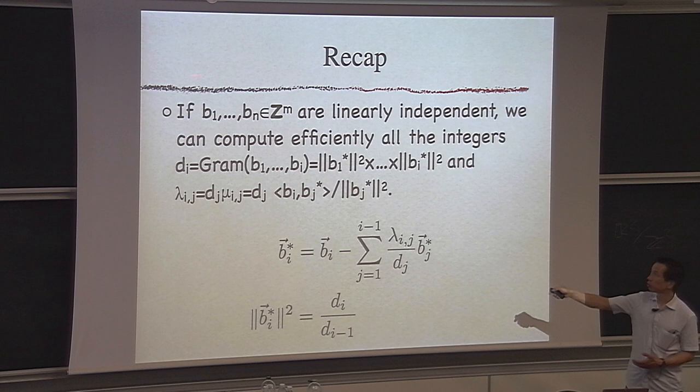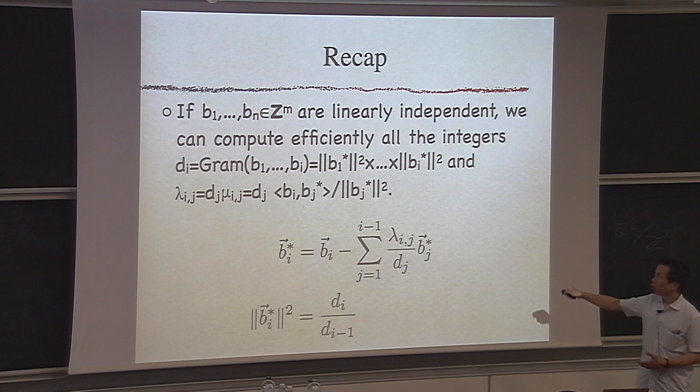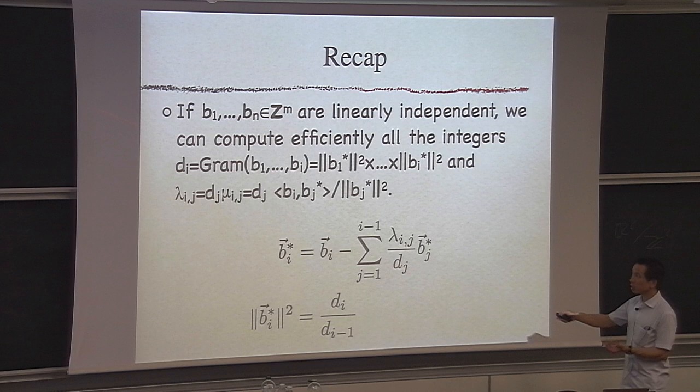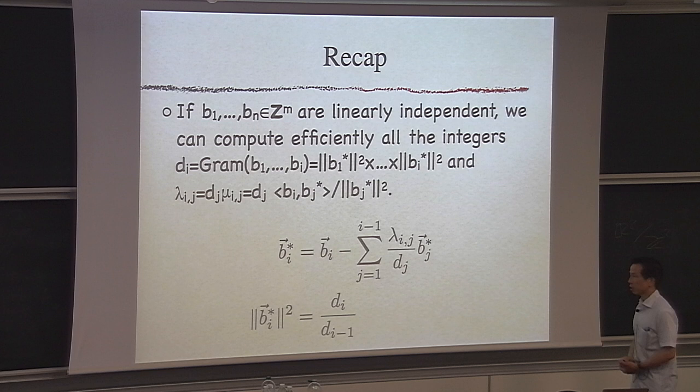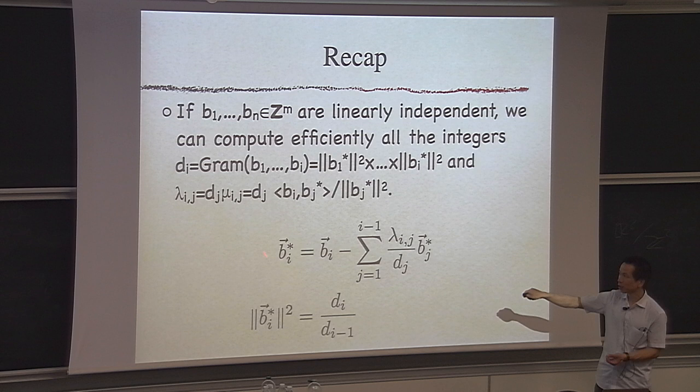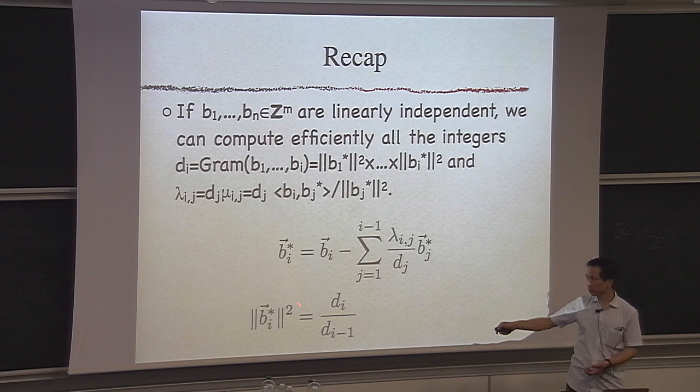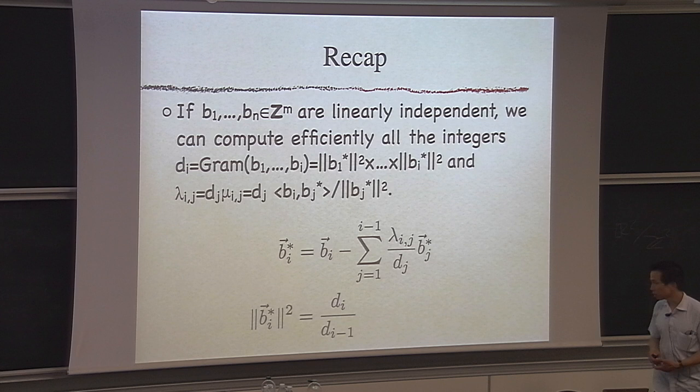To summarize: we started with integer vectors and showed how to compute all the Gram determinants efficiently, as well as an integer representation of the Gram-Schmidt decomposition — the numerators and denominators of the mu_ij. Once we have that, we can derive explicitly the Gram-Schmidt vectors if needed, and also compute the squared norms of the Gram-Schmidt vectors as rationals.